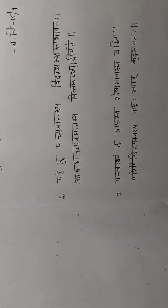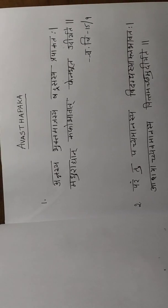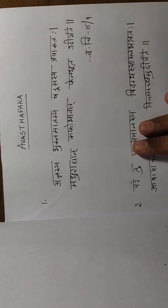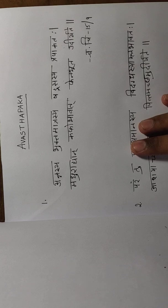In today's episode, we will be dealing with the process of food digestion, which is also called Avastha Pak. Avastha Pak is nothing but how food is being digested at various stages. Ayurveda explains three stages of digestion: Avidigdha Avastha, Vigdha Avastha, and Pakva Avastha.